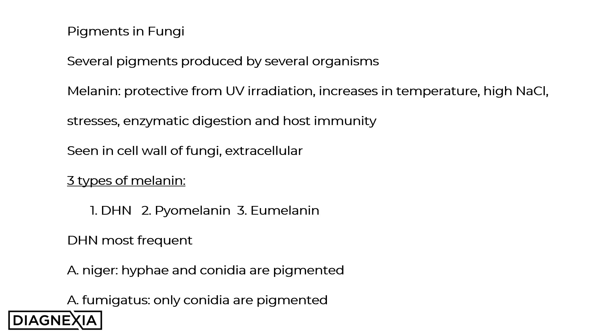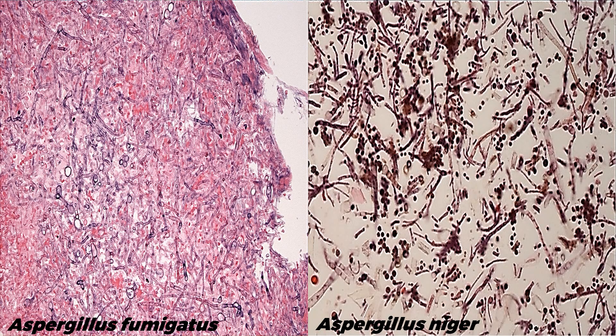The melanin distribution is different between Aspergillus niger and Aspergillus fumigatus. In Aspergillus niger, both the hyphae as well as the conidia are pigmented, whilst in Aspergillus fumigatus only the conidia are pigmented. Here is a side-by-side comparison of the two species. Clearly the Aspergillus niger on the right is characteristically pigmented. However, the morphology of both can be seen to be very similar, with the hyphal forms showing septation as well as dichotomous branching at 45 degrees, most evident in the Aspergillus fumigatus example.